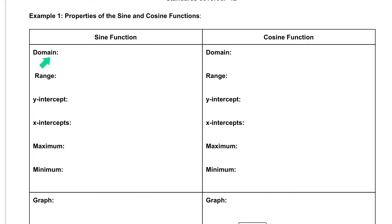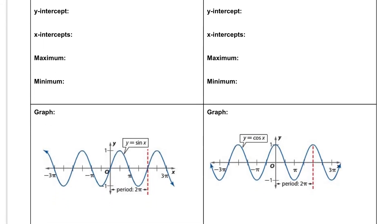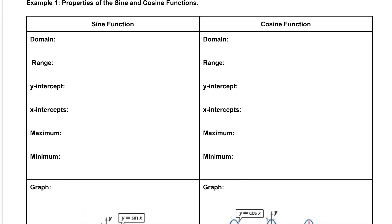The first thing we want to know is the domain. Looking at the picture of the graph, we can see it continues making these curves, going on forever to the right and to the left. That tells us that the domain of our function is going to be from negative infinity to positive infinity.